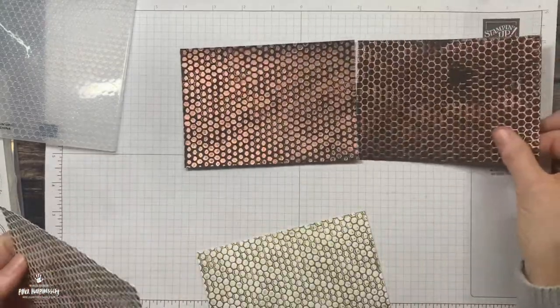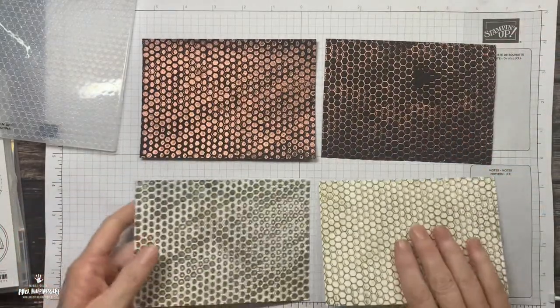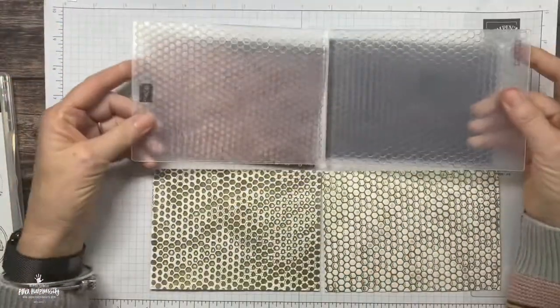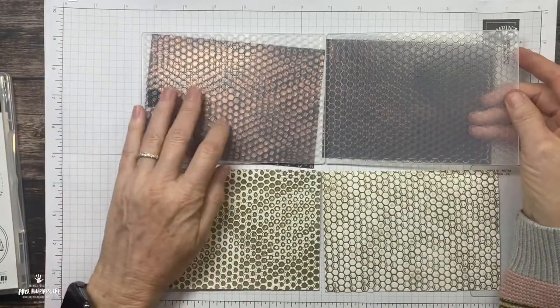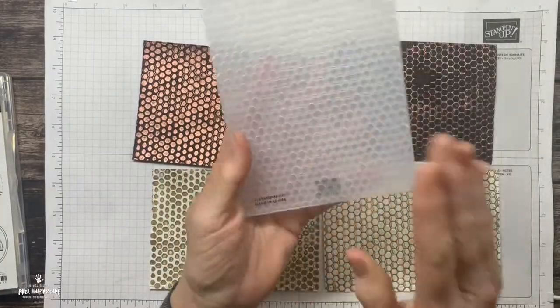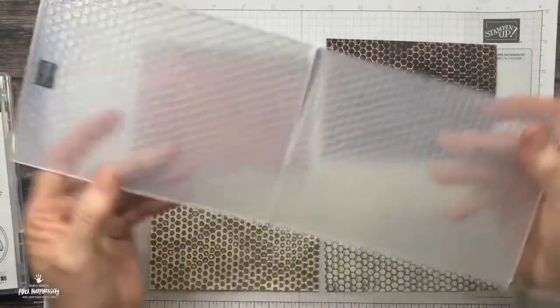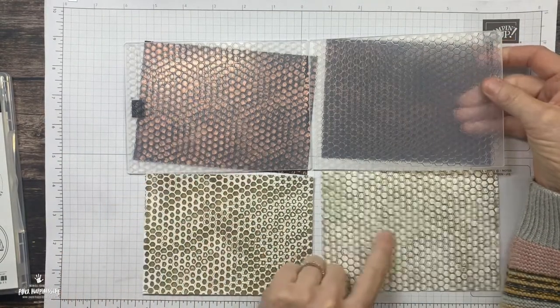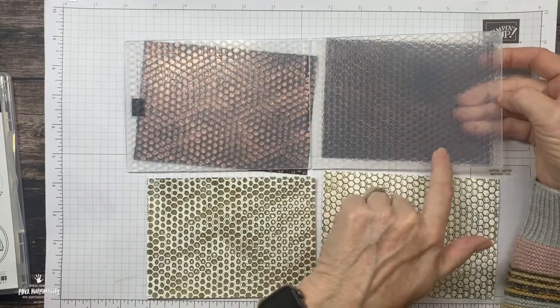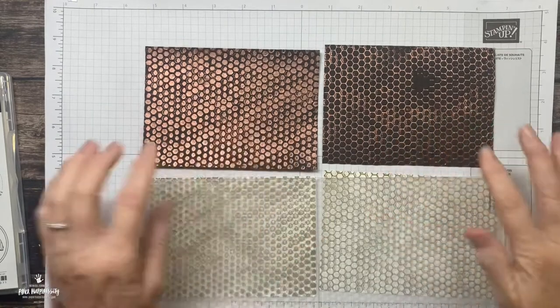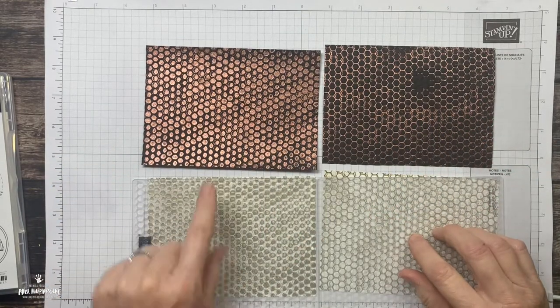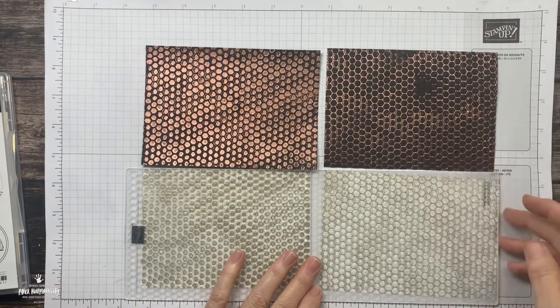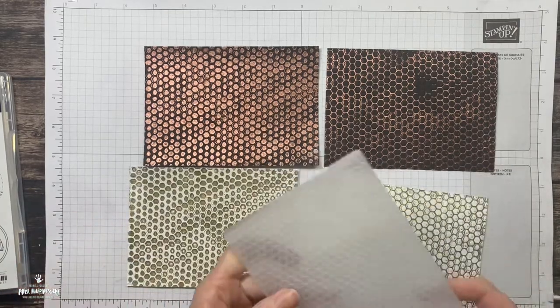Before we start I wanted to show you the difference depending on what side of the embossing folder you use. This is the result you get for using the top and this is the result you get for using the bottom or the negative. Same with the black - this is putting your Versamark on the top and then putting your Versamark on the back, creating a negative result.